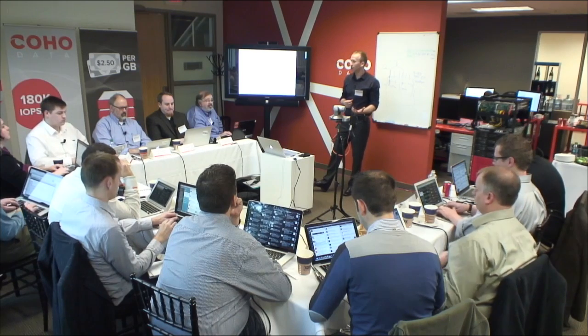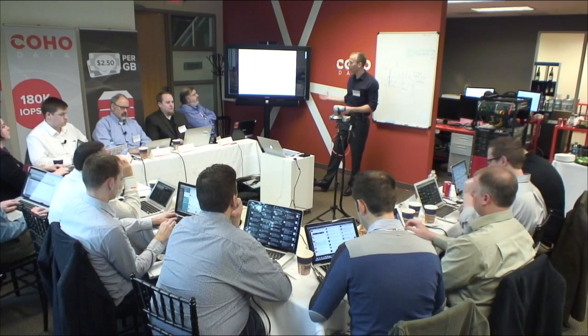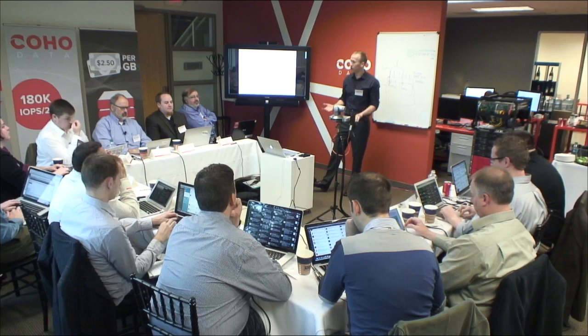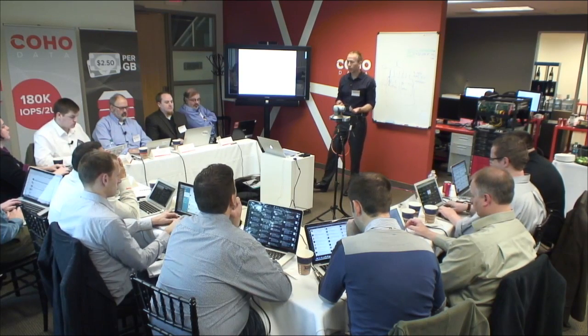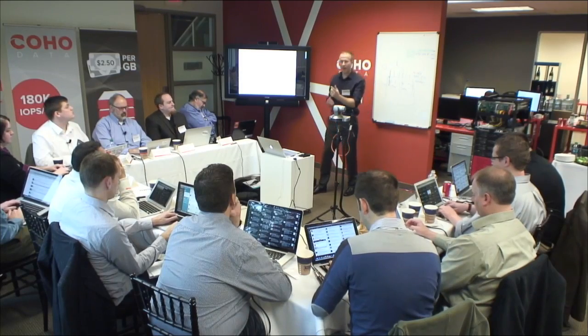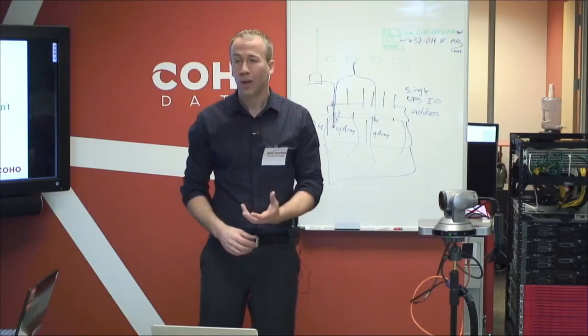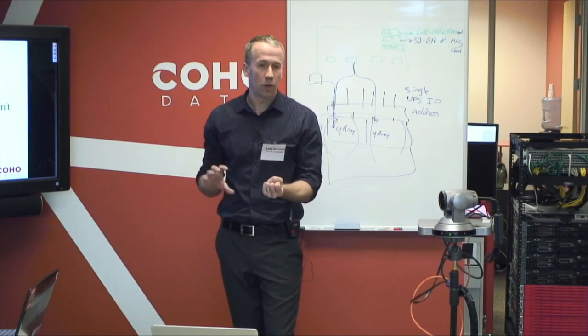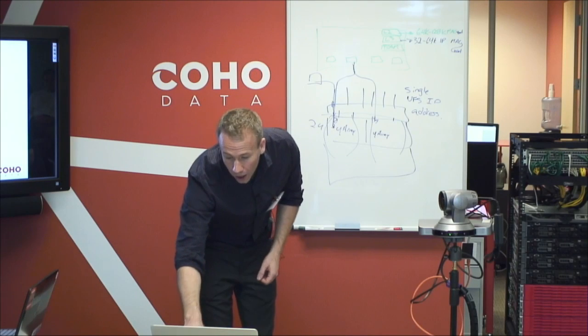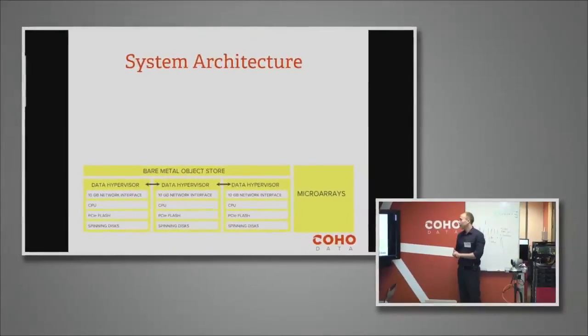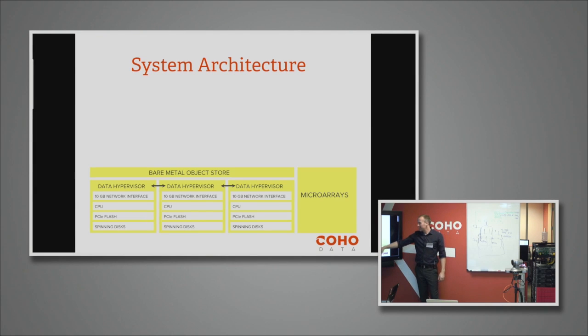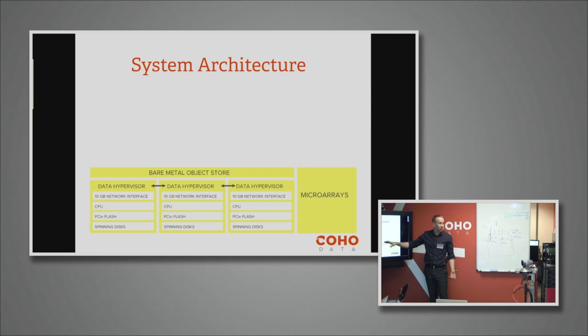We took a very conscious decision not to expose any of those object APIs in our GA product. The GA product is around a specific enterprise use case which is high performance NFS. We built a V3 layer on top of the thing as something that we could market and sell immediately that has relevance in the enterprise. There are additional layers that we will roll out as we go. We describe that stack at the bottom as a sort of data hypervisor. It's responsible for multi-tenancy on the flash and for auto-tiering down to the disk.